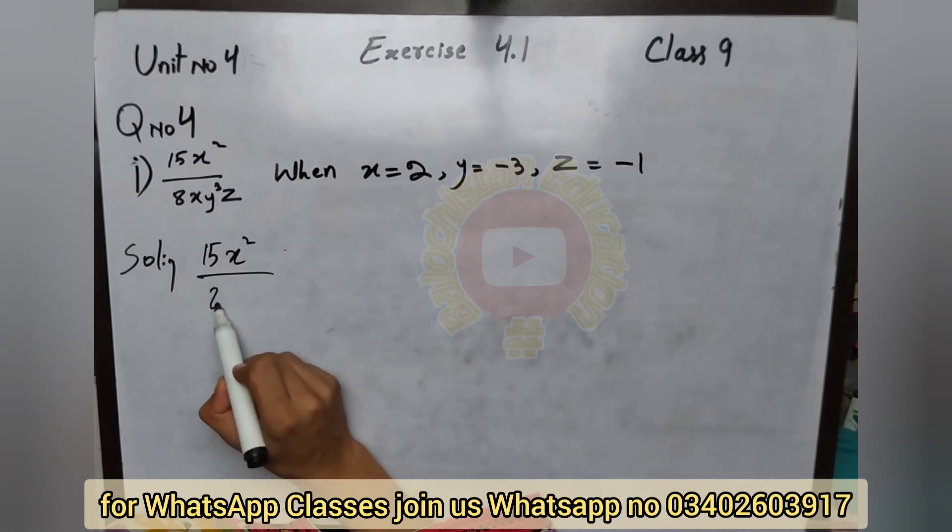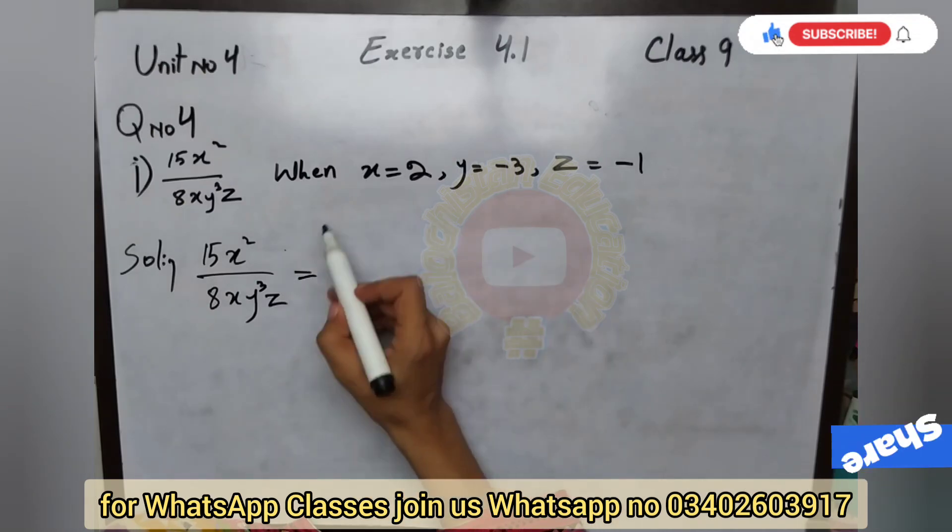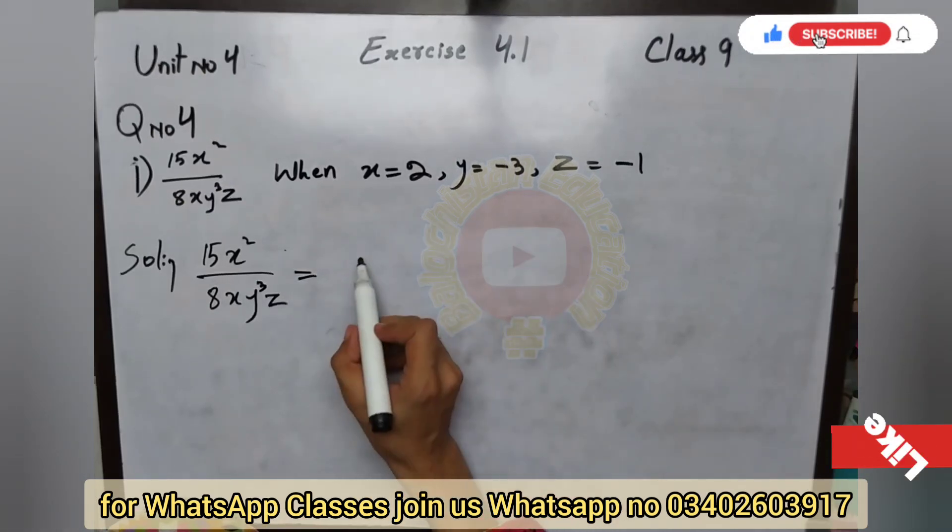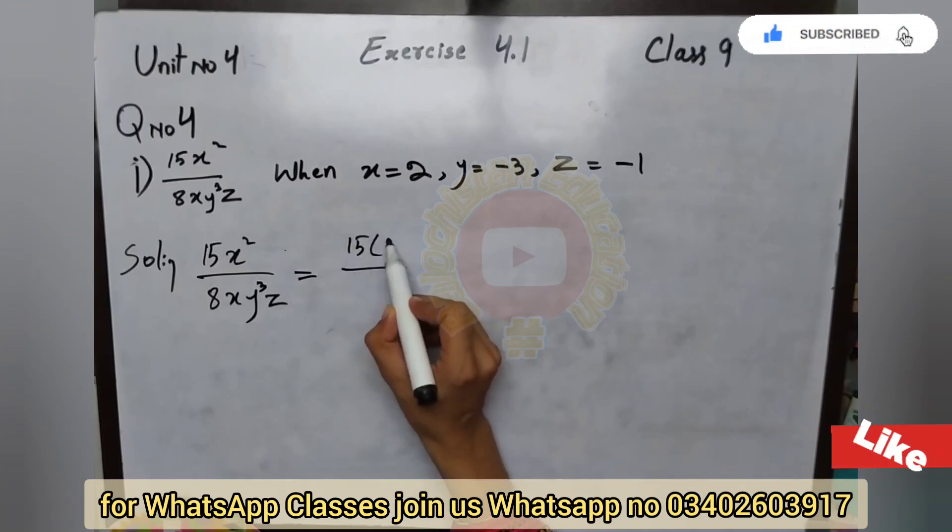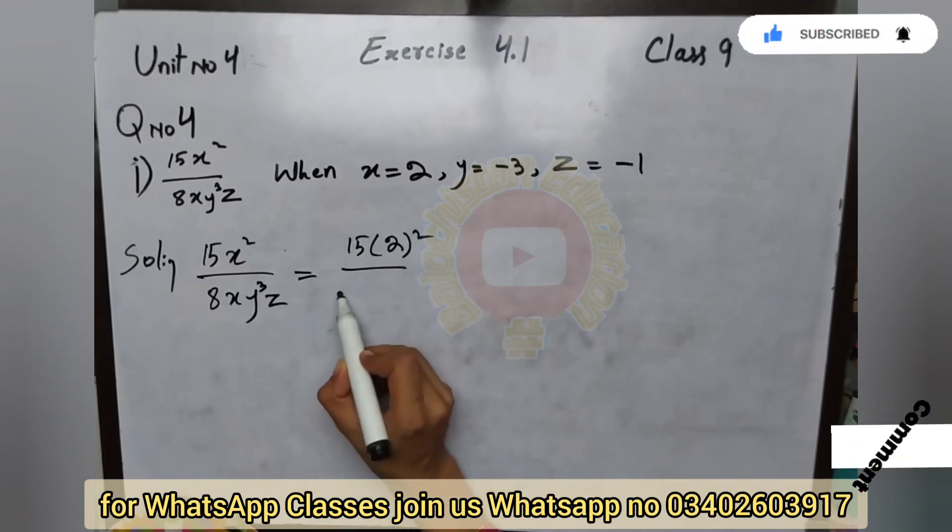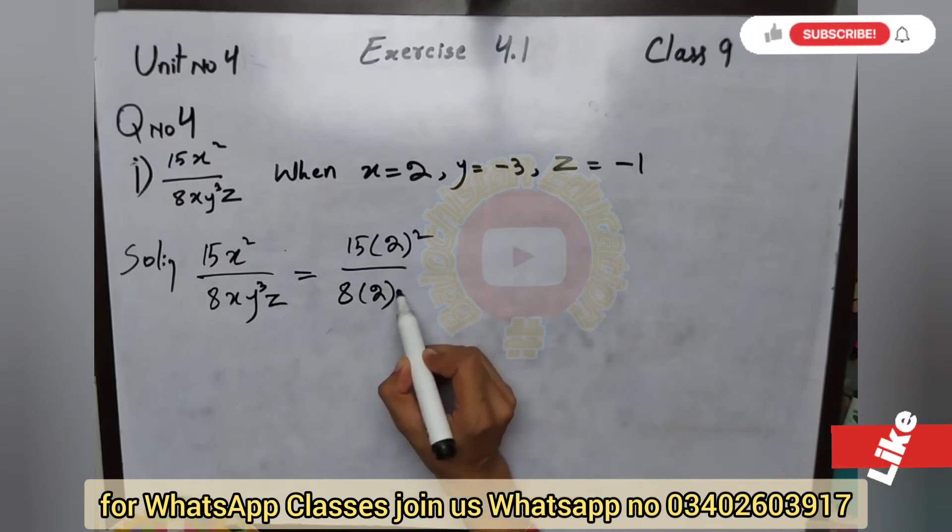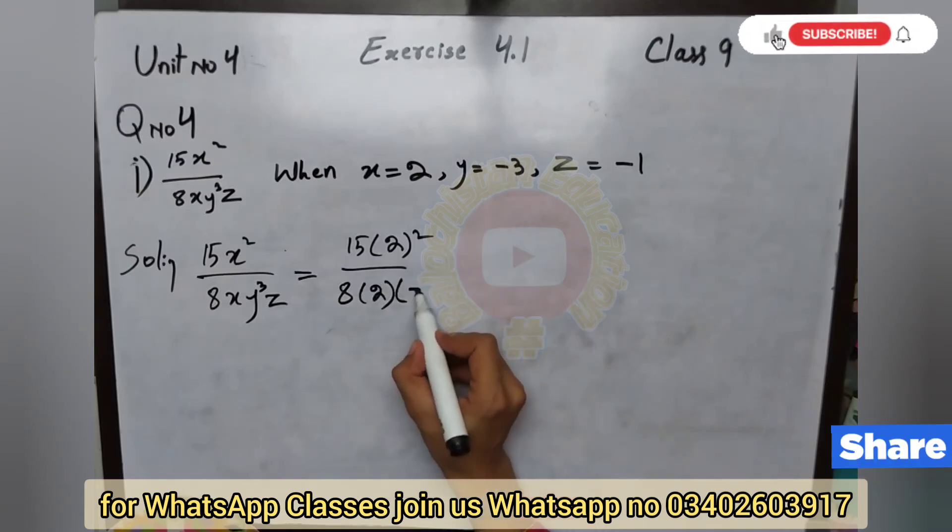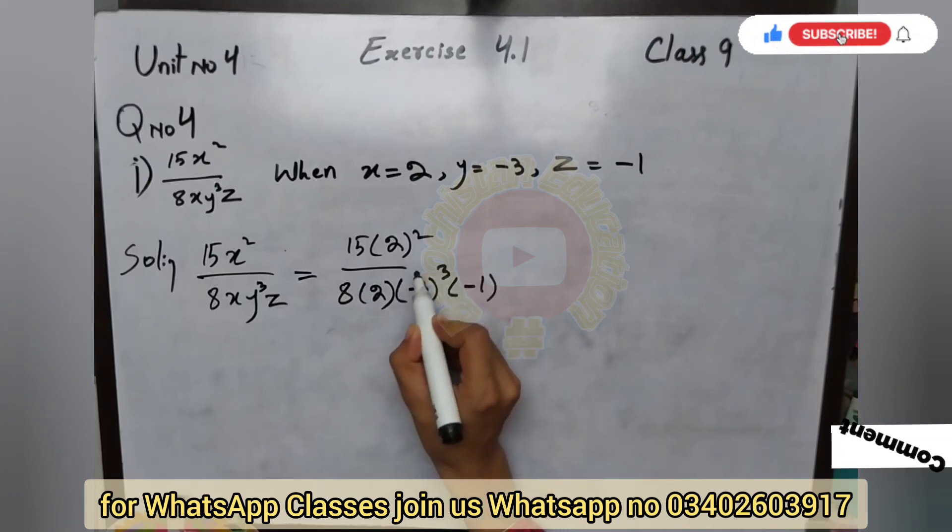We have to put these variables values. We have to put and solve. Now see, x is equal to 2, so 15 multiplied by 2 square upon 8 times x times y times z. Then y is minus 3, so minus 3 cube, and z is minus 1.